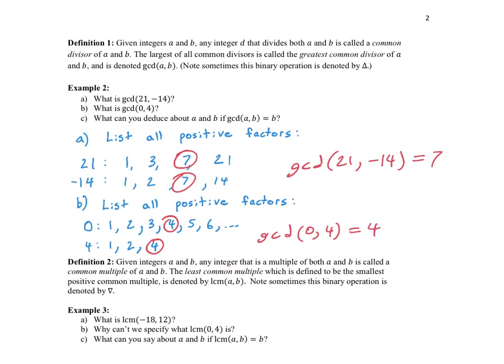One more question: what can we deduce about A and B if GCD(A, B) = B? Well, B has B as a factor — we probably knew that. But we can also deduce that A has B as a factor, meaning A is a multiple of B.